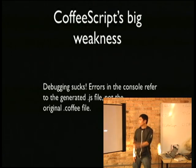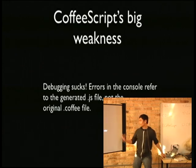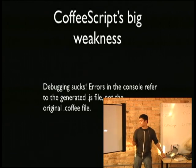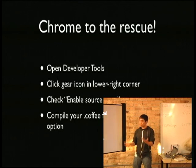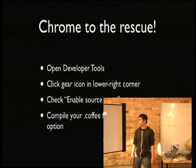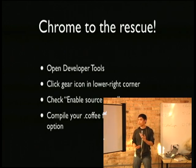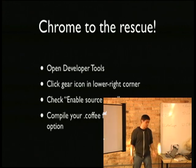Here's the big weakness of CoffeeScript: debugging is really shitty. For obvious reasons, your errors come from the JS file that's generated — not from your original .coffee file. However, there's a newish feature in Chrome where if you follow these instructions, you can enable what's called source maps. Then when you look at errors, they point to your actual .coffee file, and you can even do debugging inside of Chrome.